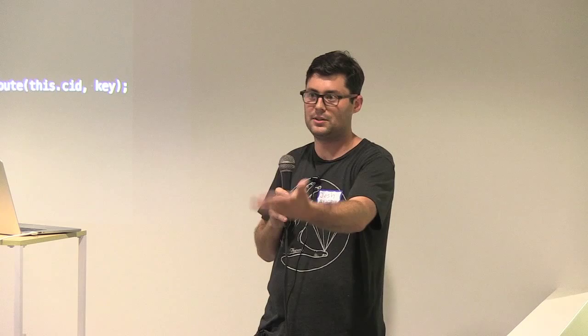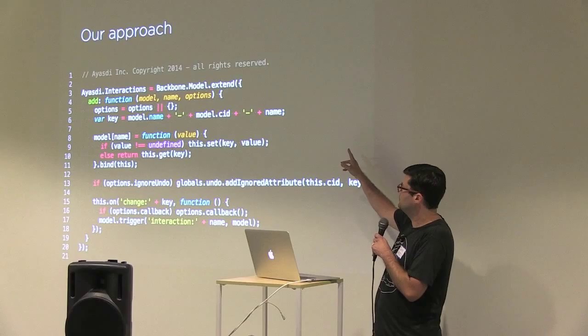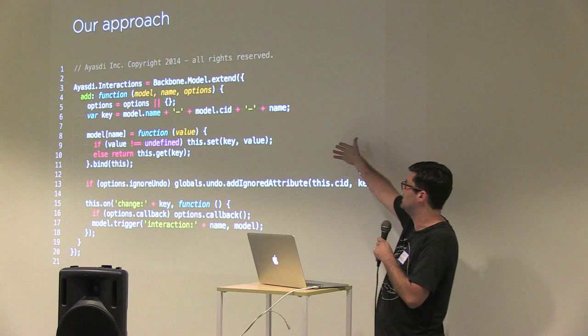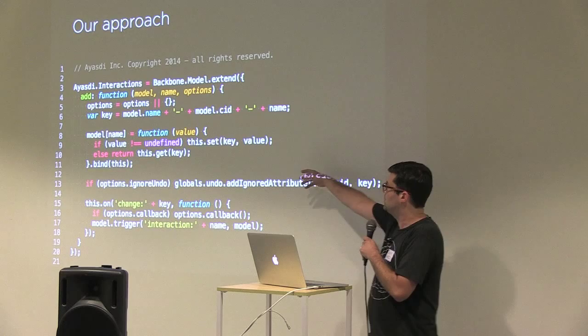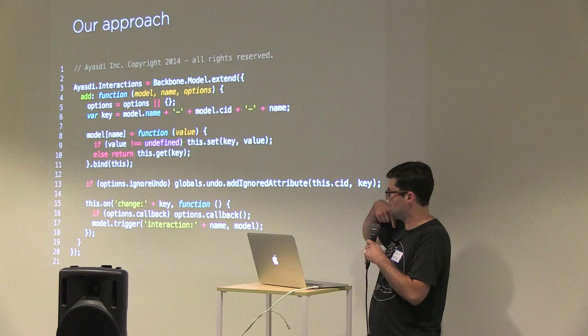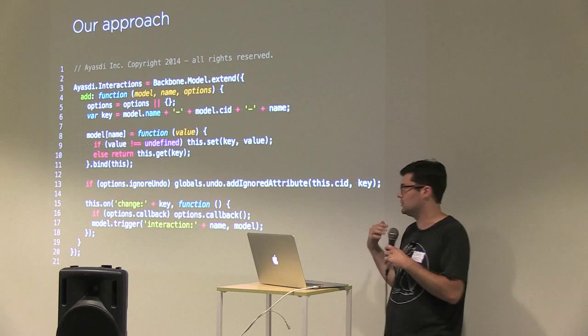Looking at the code: on line six, we're namespacing the model attribute with the requesting model's name — for debugging and readability — plus its ID, plus the name of the event. So this might be something like 'network-C17-selected-nodes.' We attach D3-style setters and getters to that property of the model. Then the interaction model watches itself for any changes to that key, gives the requesting model an option to pass in a callback so it can update internal state before its listeners are notified, and then triggers a special interaction event on the model itself. About 20 lines of code.